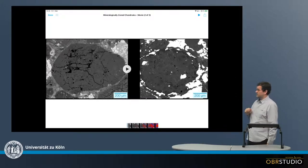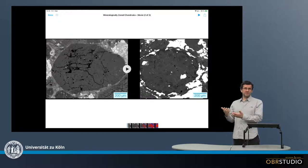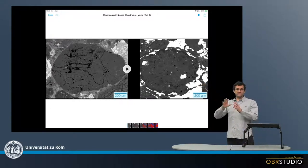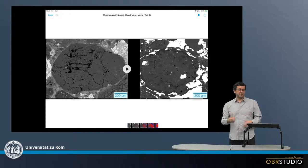These are two backscatter electron images, and it's quite hard to spot whether these are zoned or not. On the left one it looks like there's no zonation at all, while on the right one there is a darker rim which might indicate a zonation.